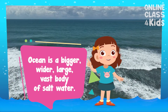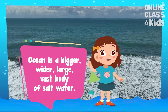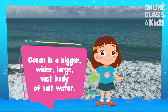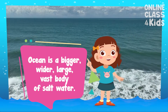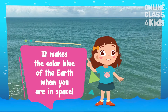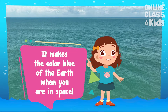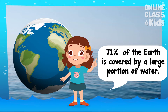While an ocean is a bigger, wider, large, vast body of salt water — it makes the color blue of the Earth when you are in space. In fact, 71% of the Earth is covered by oceans. Huge, right?